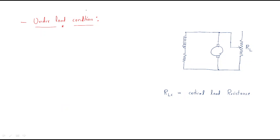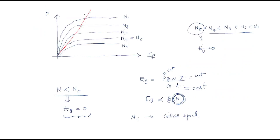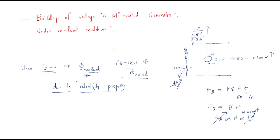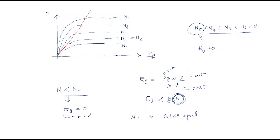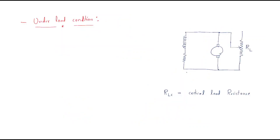Up to now we discussed two things about the self-excited DC generator under no load condition, analyzing the open circuit characteristics and the critical speed. Now we will move on to what happens when we use a load for the self-excited generator.